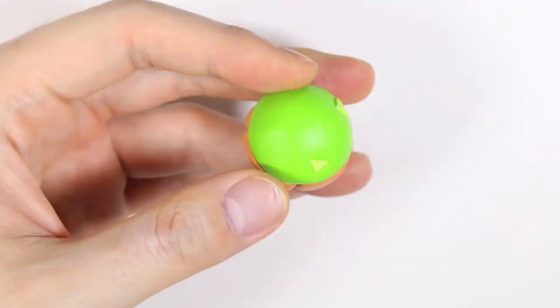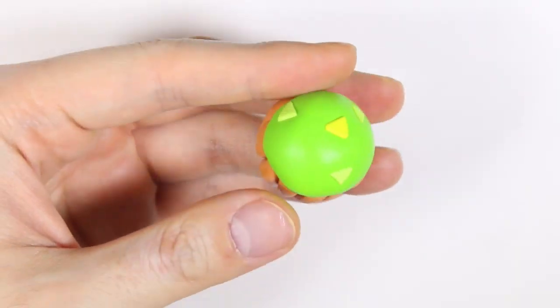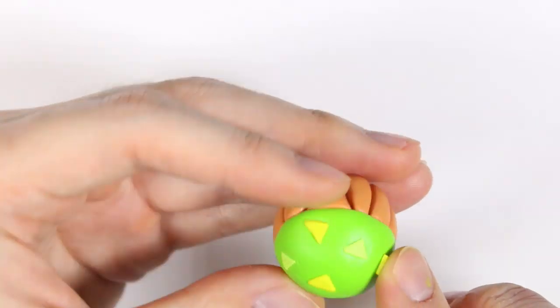And then I'm going to attach the triangles onto the green part of our island and I'm just putting them randomly throughout.